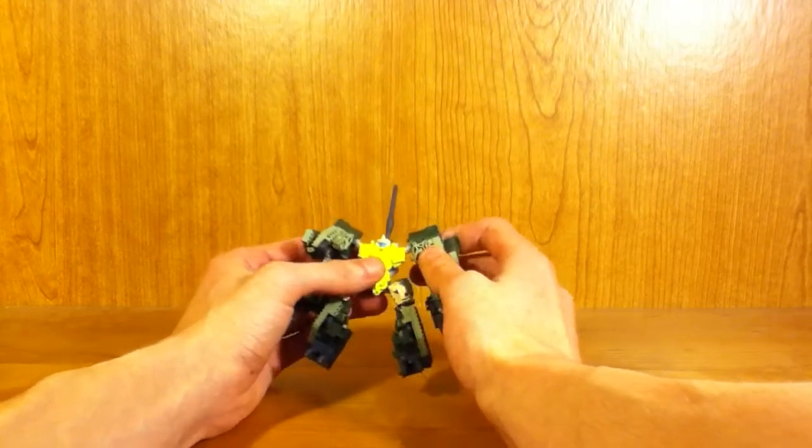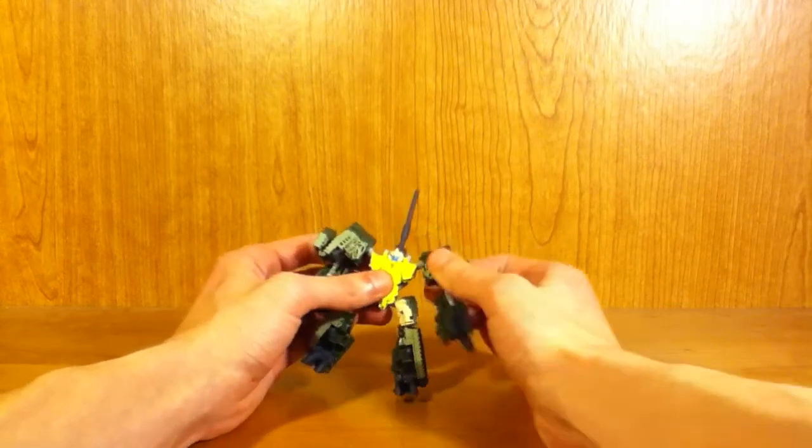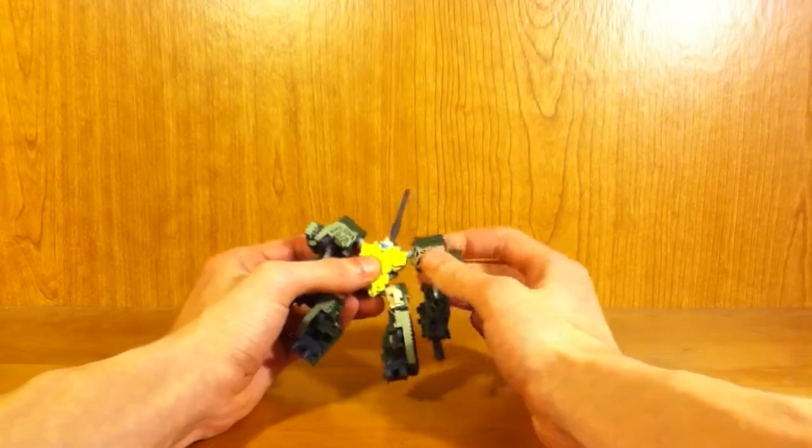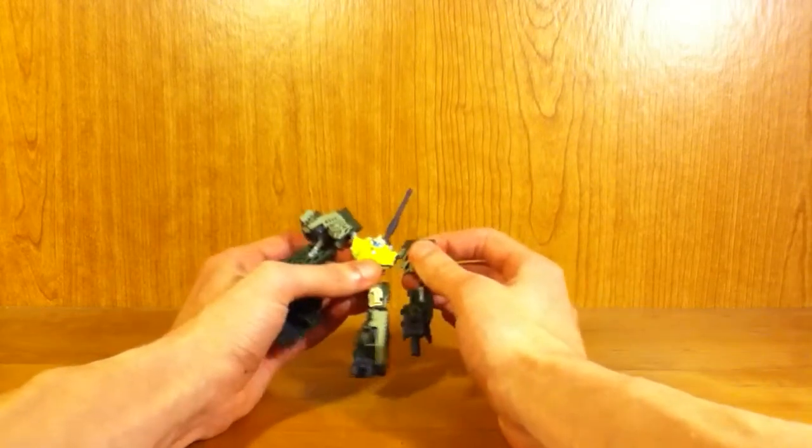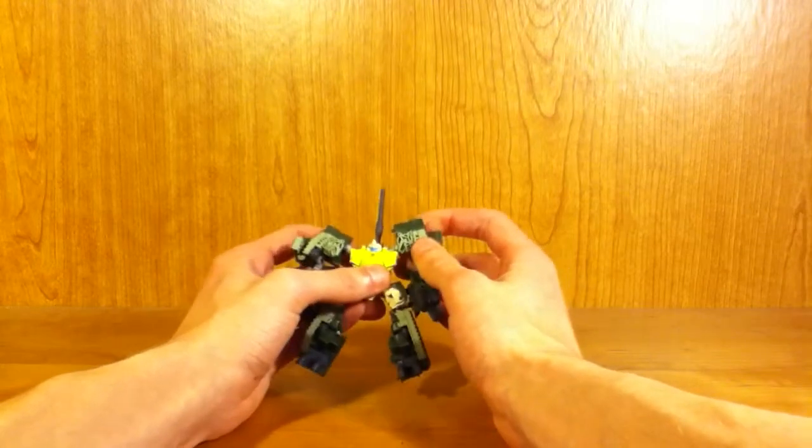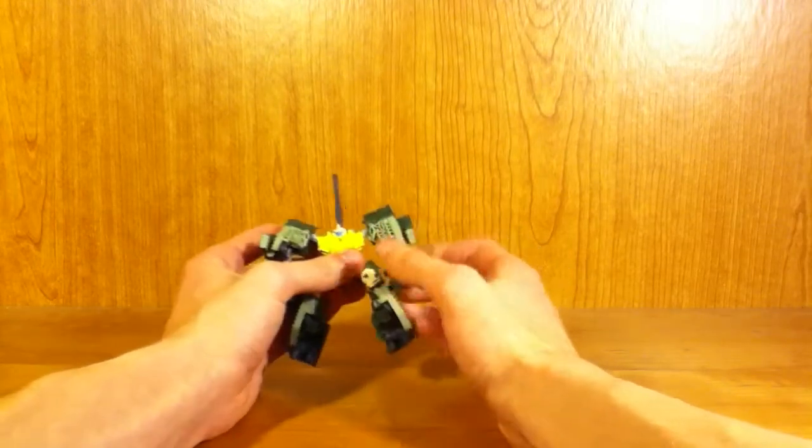He does have ball jointed shoulders, which are very nice. So you can rock them back and forth. You can also if you want use this transformation joint to hunch up his shoulders if you like, which is kind of nice.